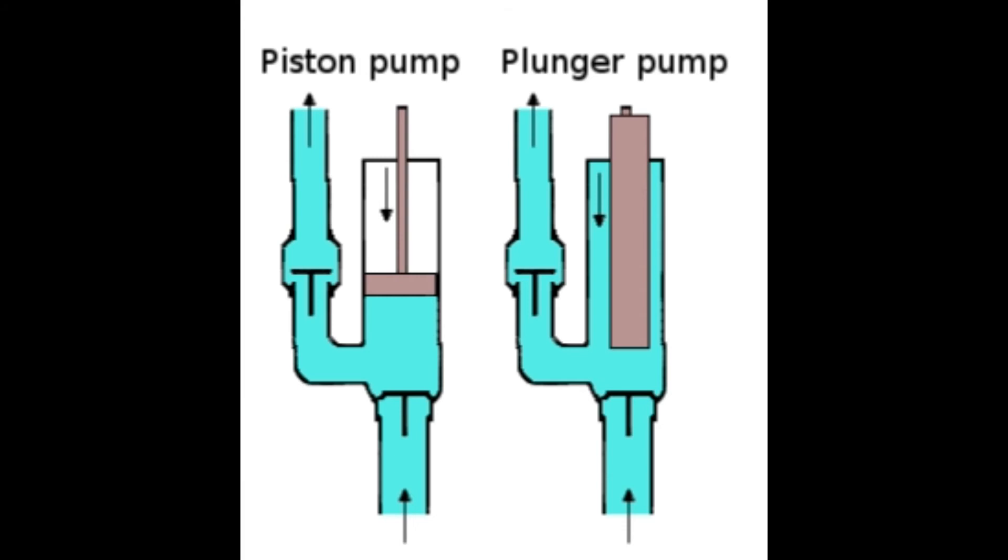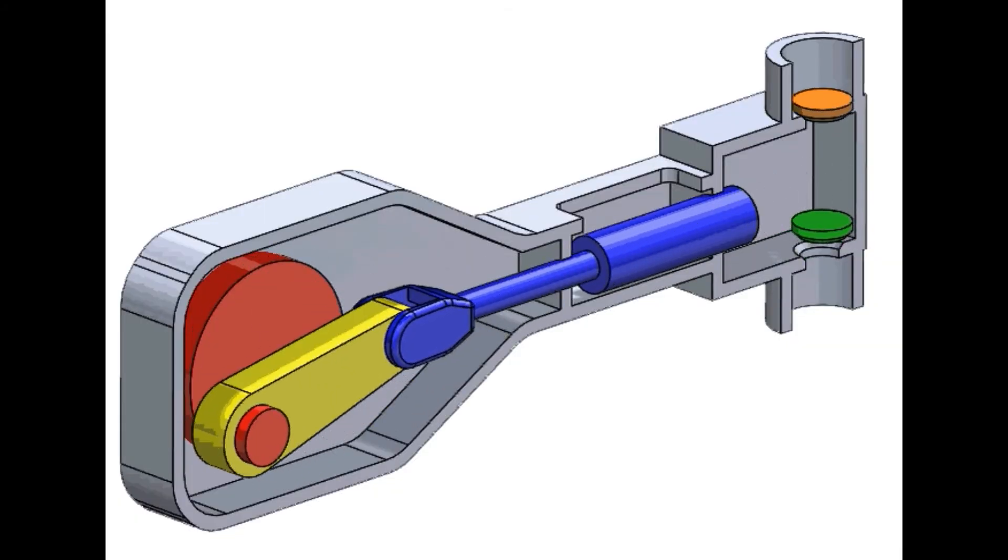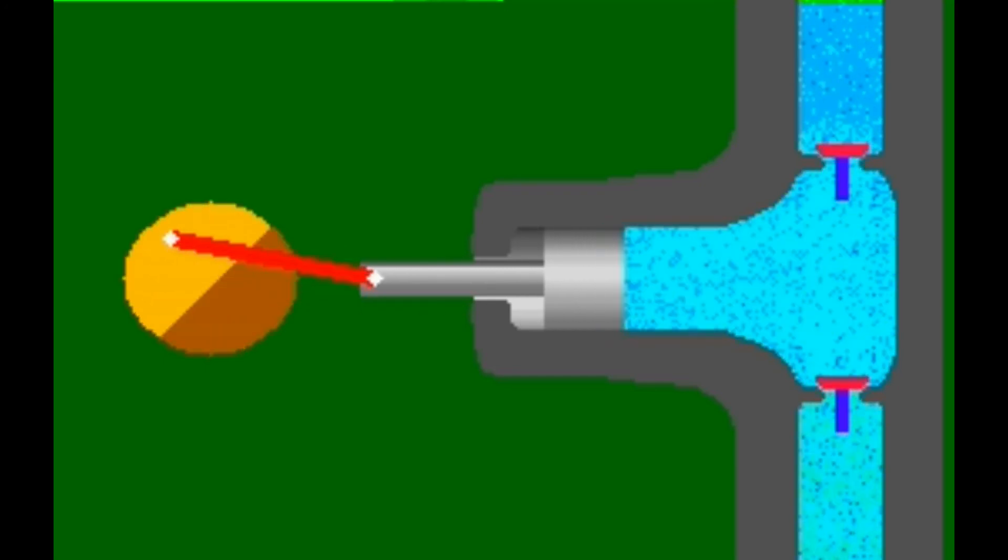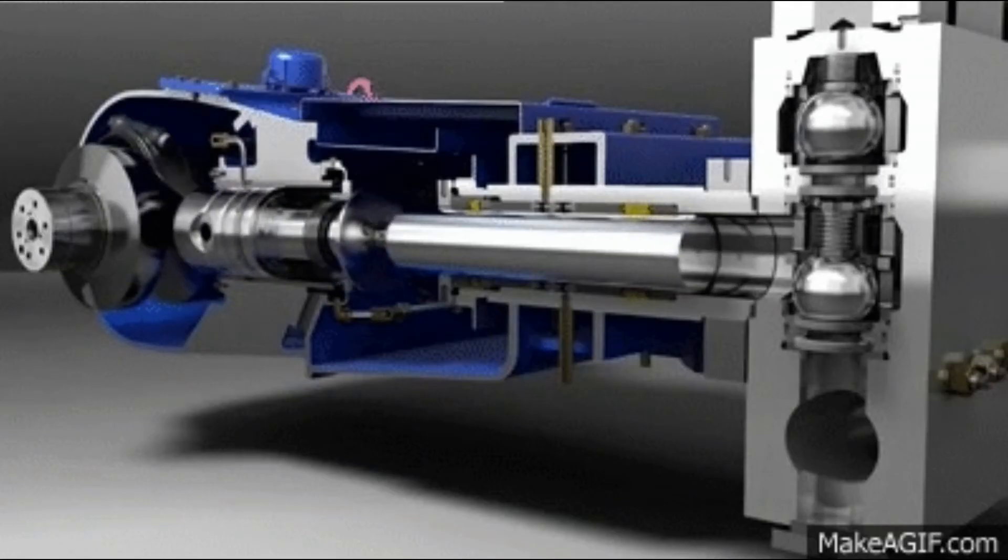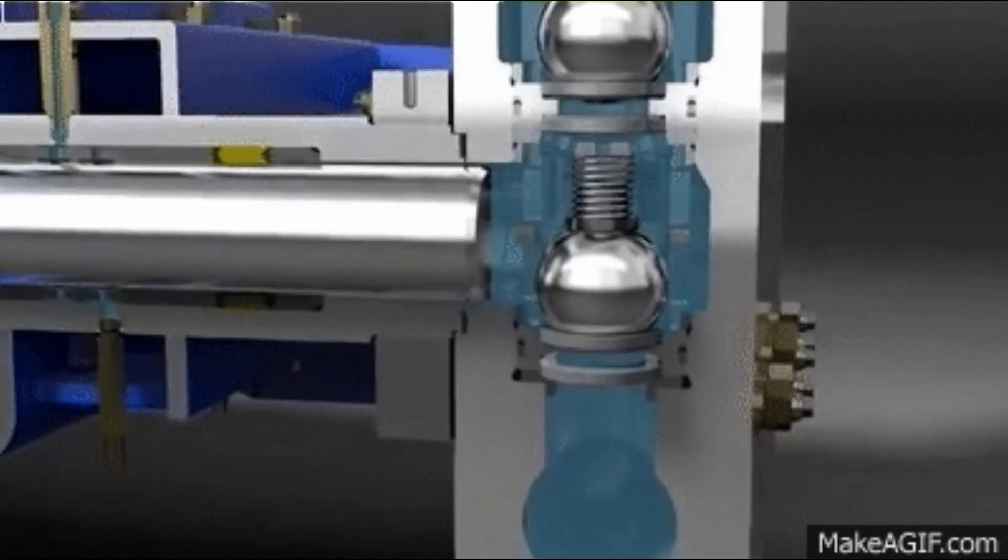What is a plunger pump? Plunger pumps are reciprocating positive displacement pumps. These consist of a cylinder with a reciprocating plunger. The suction and discharge valves are mounted in the head of the cylinder. In the suction stroke the plunger retracts and the suction valves open causing suction of fluid into the cylinder.